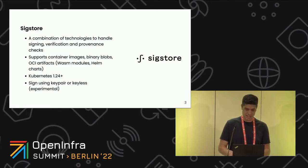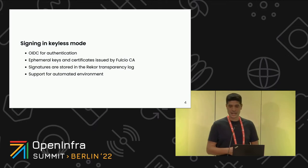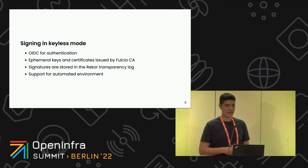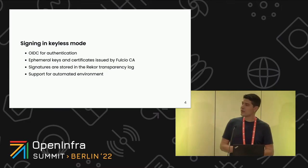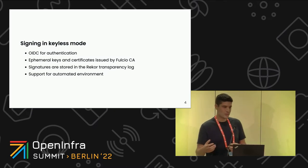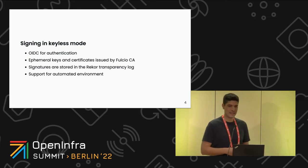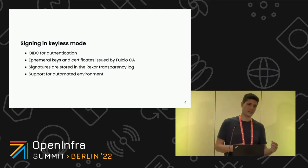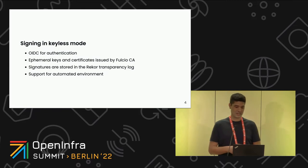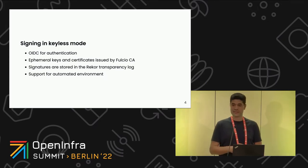The keyless workflow uses OpenID for authentication. OpenID is an identity layer built on top of OAuth 2, and it allows clients to verify the identity of an end user using an authorization provider. When you try to create a new certificate, you request it from Fulcio and pass an OIDC token. Fulcio verifies your identity, generates an ephemeral short-lived certificate, and you use that certificate to sign your image. You store the signature in an OCI registry and also in the Rekor transparency log, so you can later verify the signature without needing to distribute a public key.